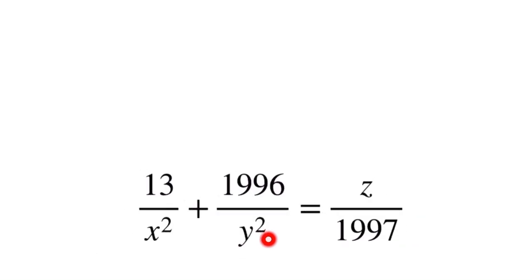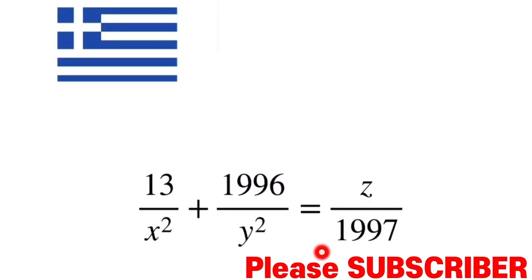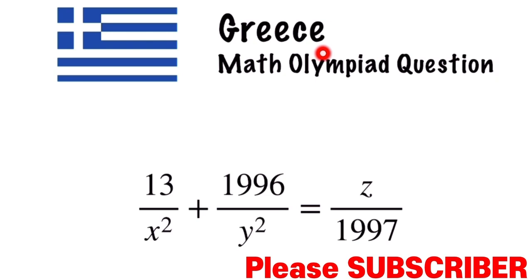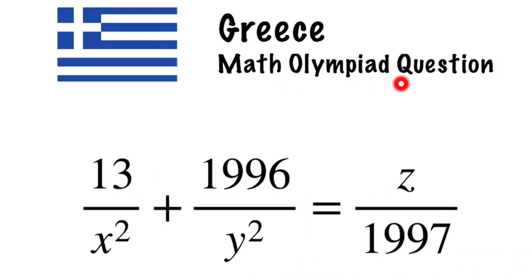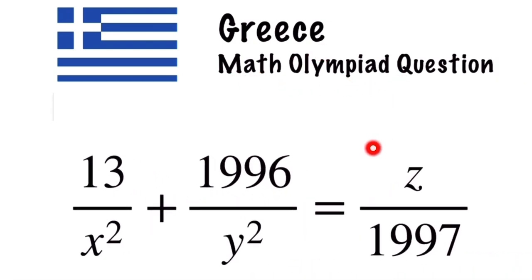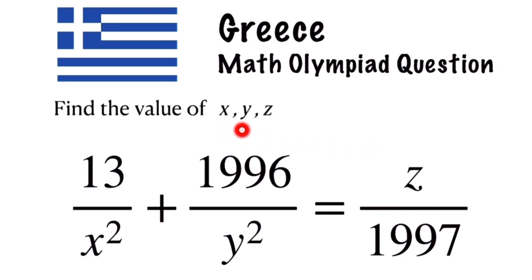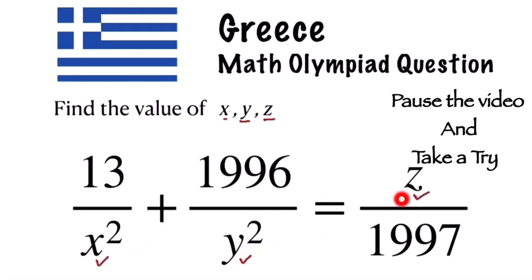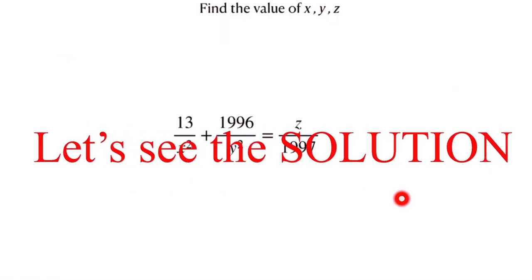Hello everyone and welcome back. In this video we are going to solve a question taken from the GR's Maths Olympiad. You have to find the value of x, y, and z. If you can solve this, pause the video and give it a try. Let's see the solution.